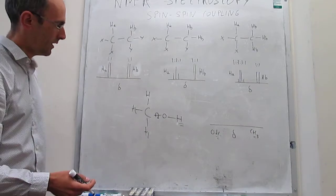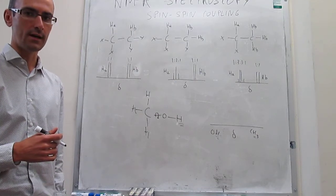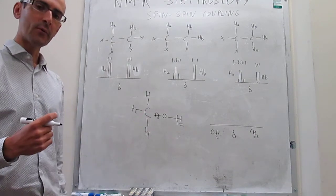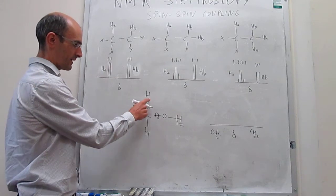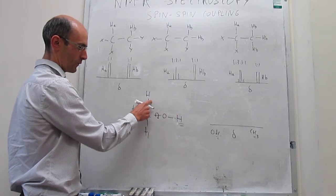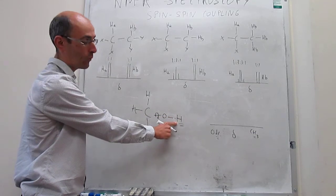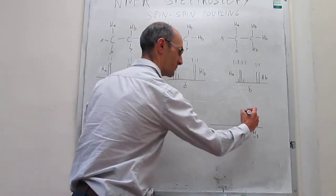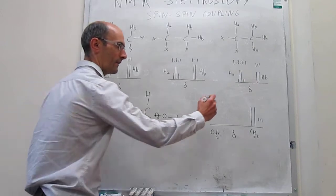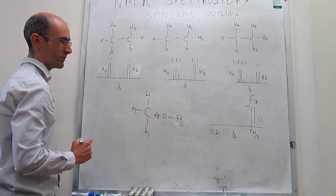The last thing we need to solve is the splitting patterns and relative intensities within those peaks. For the CH3 signal, we look for NMR-active nuclei within three bonds of that signal. We find one NMR-active nucleus within one-two-three bonds, so this signal will be split into a doublet by one proton — simply a doublet of relative intensity one-to-one. The integral of that area equals three because three protons contribute to that signal.